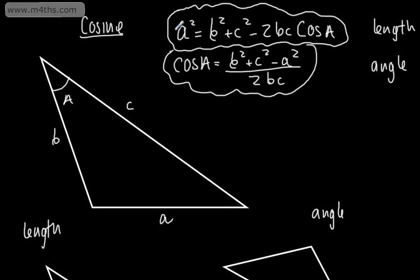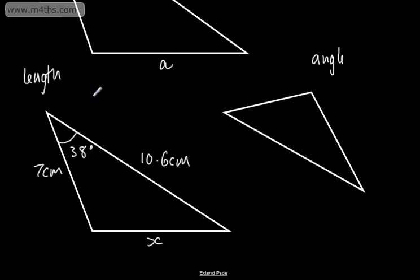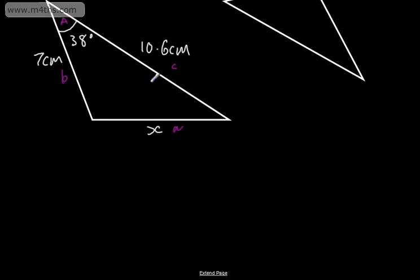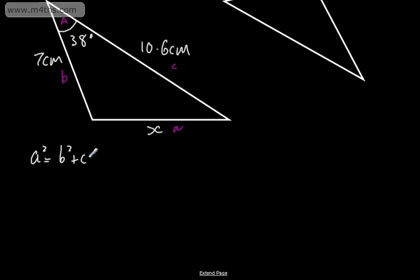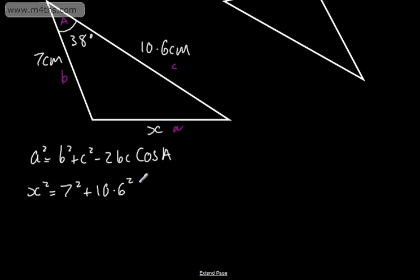Using the formula A squared equals B squared plus C squared minus 2BC cos A, and labeling up: this is angle A, this is side A (which is X), this is B, and this is C — B and C are interchangeable. Writing the cosine rule: A squared equals B squared plus C squared minus 2BC cos A. So X squared is equal to 7 squared plus 10.6 squared, minus 2 multiplied by 7 multiplied by 10.6, multiplied by the cosine of 38 degrees.